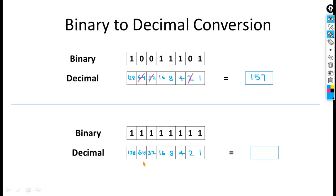128 and 64 make 192; 192 and 32 more makes 224; 224 and 16 more is 240; 240 and 8 is 248; 248 and 4 is 252; 252 and one more is 255. So the given binary value is equivalent to decimal 255.